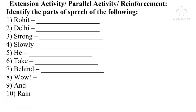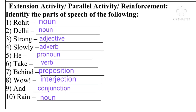Next is the extension activity or parallel activity — purak kruti. Identify the parts of speech of the following. Khalil shabdan che jati abdala wal khai chha ahit. You have been given 10 words and asked to identify their parts of speech.